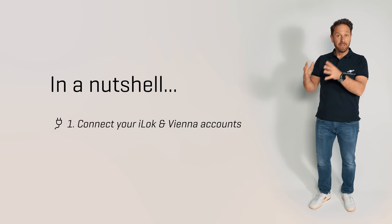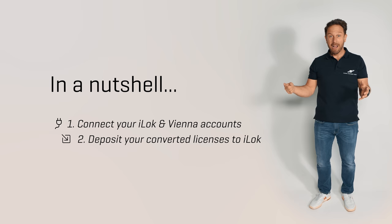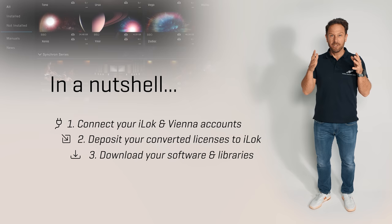It's a simple process in a nutshell. Connect your iLock account with your Vienna account. Deposit your converted eLicenser licenses to iLock. And then download and install everything you need with your new Vienna Assistant software. But let me show you everything step by step.